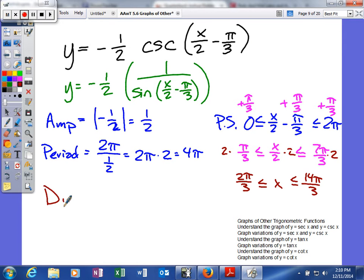The only thing we need to find now is our divisions. To do that, we're going to take our period of 4π and divide it by 4. When you do that, you get an answer of π.